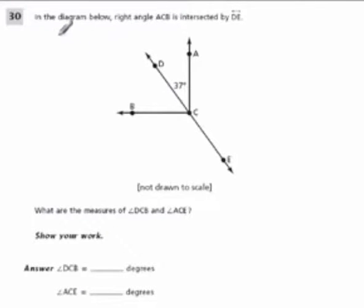Okay, in this one it says in the diagram below, right angle ACB. So where is that? ACB. So they're telling us that's a right angle, it's 90 degrees. Right angle ACB is intersected by DE.